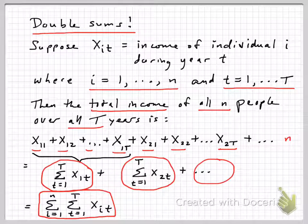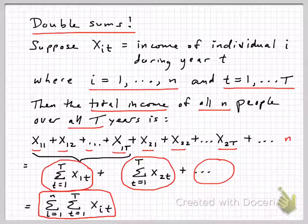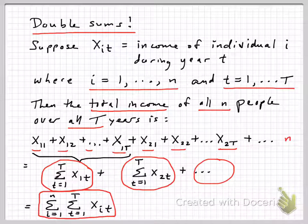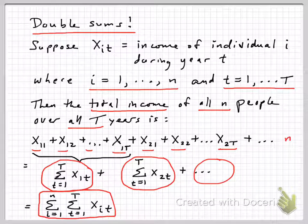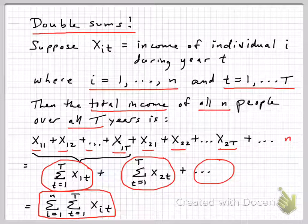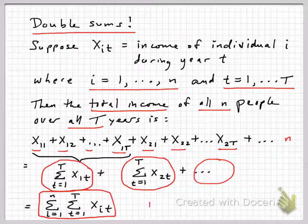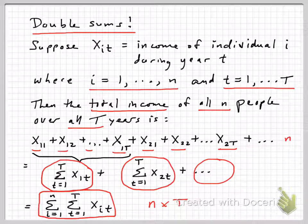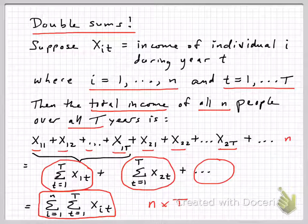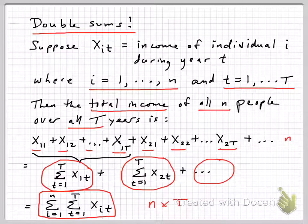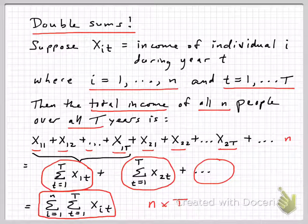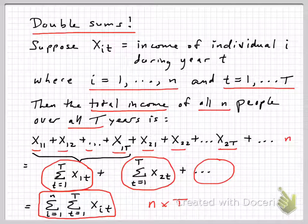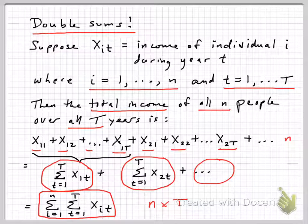And that's a double sum. In other words, we have the sum from i equals 1 to n individuals and the sum from t equals 1 to big T time periods of the x, i, t. And if you expanded that, you'd see that you're ending up with how many things being added together. Well, we have n individuals times big T year observations. So whatever that is, if we had a thousand individuals over 20 years, we'd have 20,000 things being added up in this double sum. And that can be a handy, obviously, you'd never want to write out all those things being added up together. So the summation notation makes for a very handy shortcut.